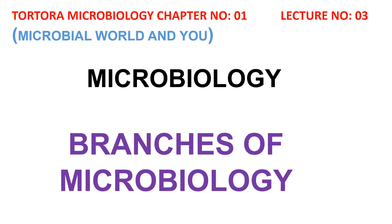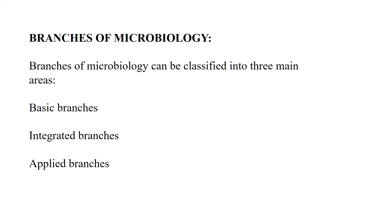In the previous lecture we discussed the types of microorganisms. In this lecture we will focus on the branches of microbiology. Each organism is studied under a specific branch of microbiology. Branches of microbiology can be classified into three main areas: basic branches, which include the type of organisms; integrated branches, which include the level at which we study microorganisms; and applied branches, covering practical applications.